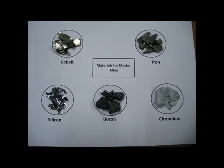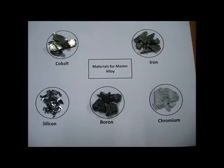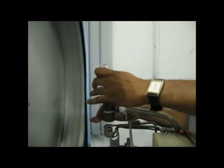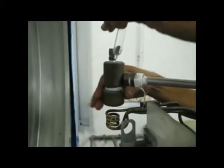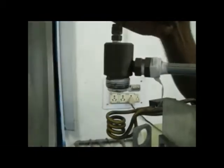Preparation of amorphous wires includes arc melting of ferromagnetic elements and metalloids to get master alloy ingot. The master alloy is taken in quartz crucible which is placed inside the induction coil and placed at the periphery of the rotating drum filled with water. The crucible is placed with its nozzle at a desired height from the water level.